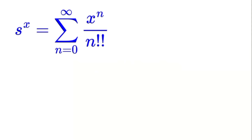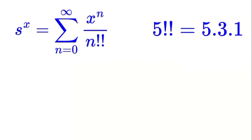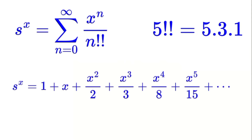What's a double factorial? It's like a regular factorial, but instead of multiplying all the numbers, you multiply every other number. For example, 5 double factorial is 5 times 3 times 1, which is 15. If we write out the first few terms of this series, we get 1 plus X plus X squared divided by 2 plus X cubed divided by 3 plus X to the fourth divided by 8 plus X to the fifth divided by 15, and so on.